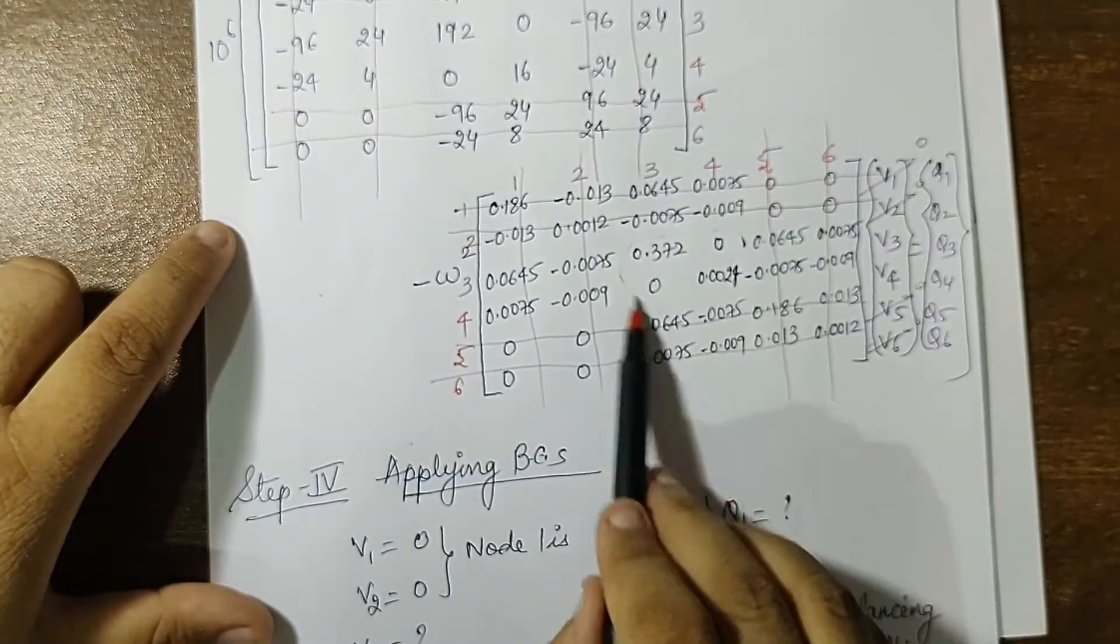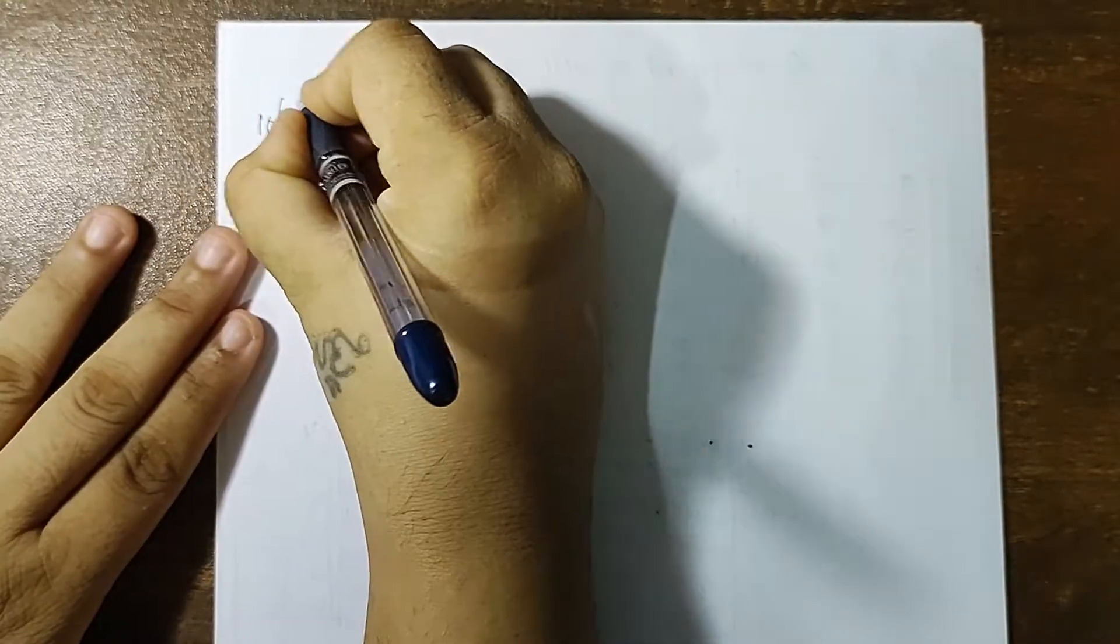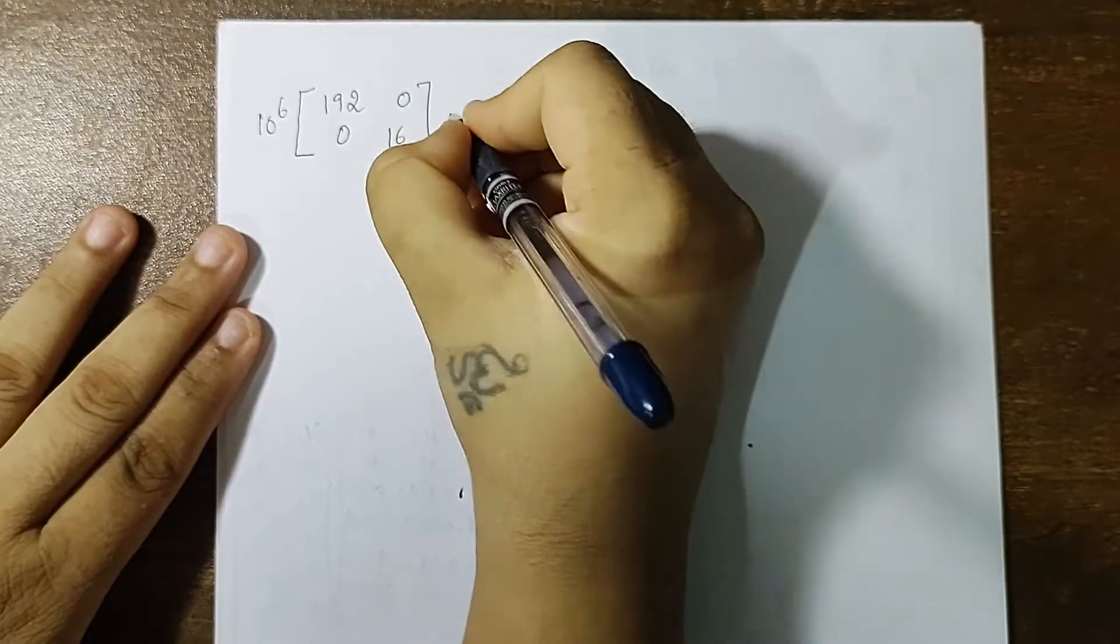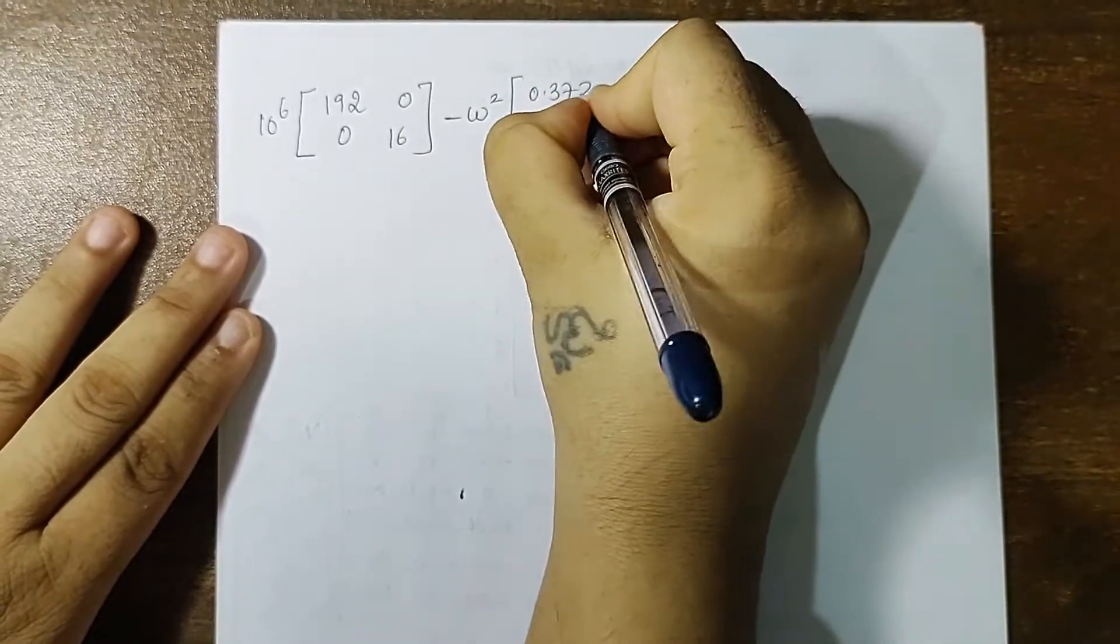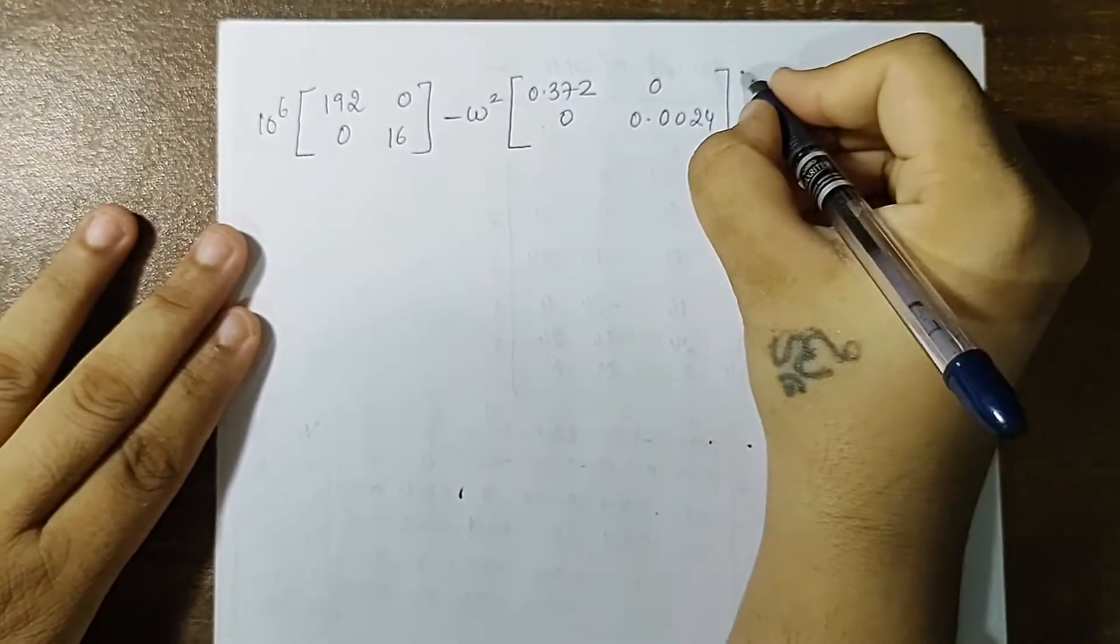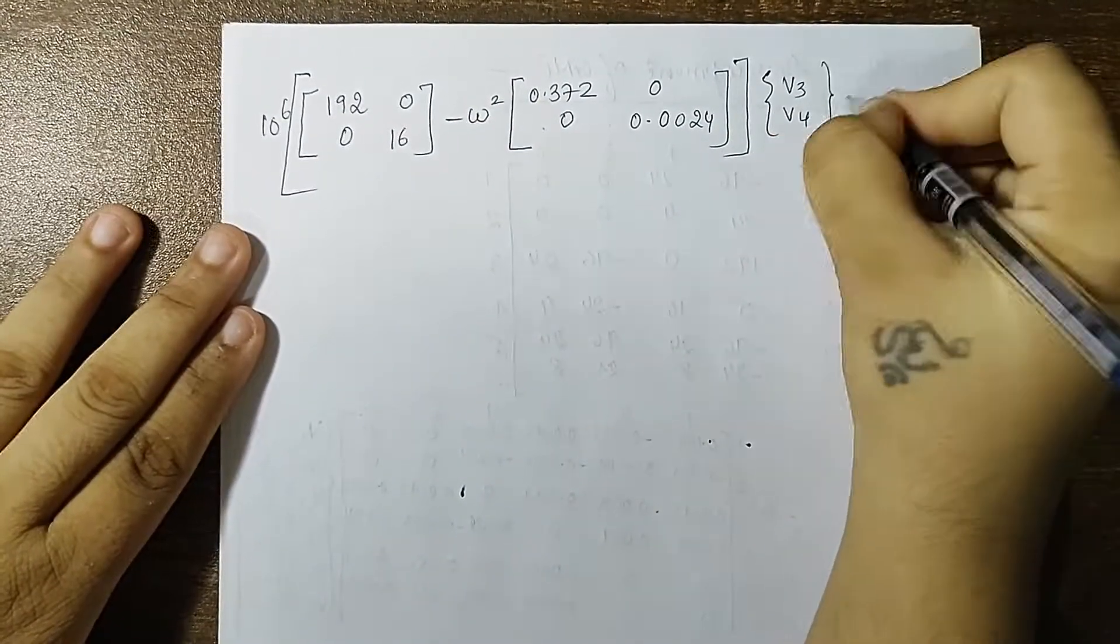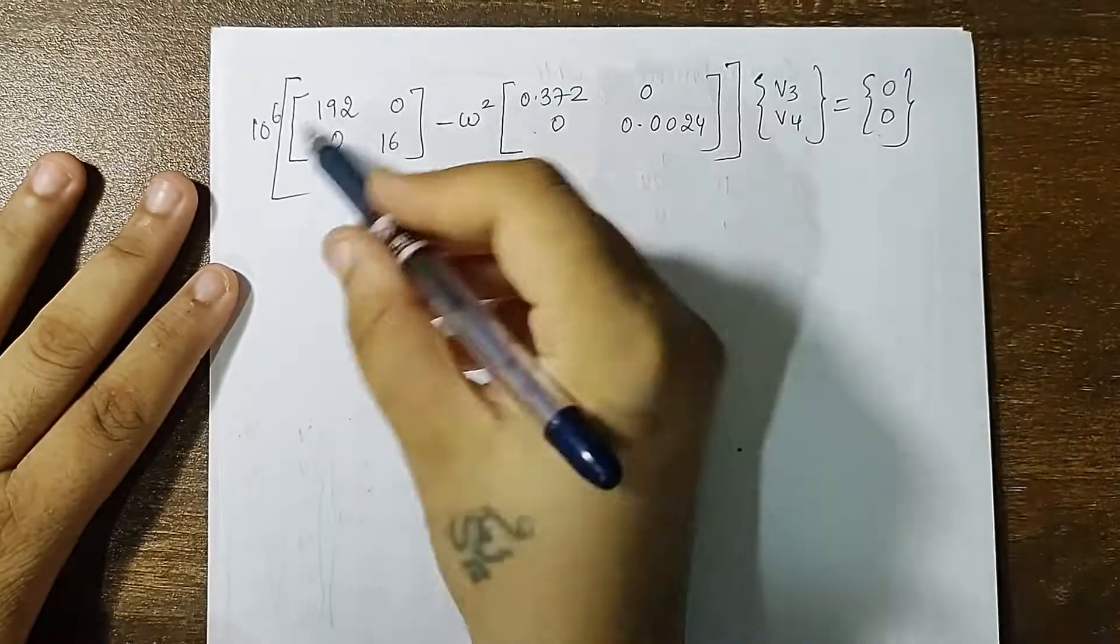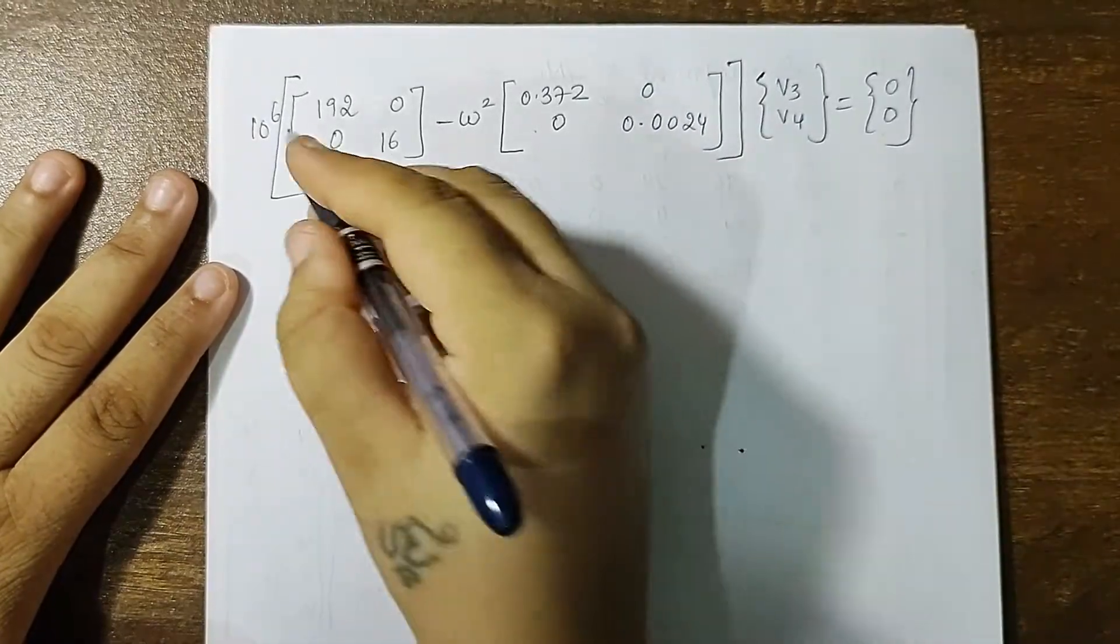You can see a small portion of matrix remains here and here. So I have 10 raised to 6 common, 192, 0, 0, 16 minus omega square 0.3720, 0 and 0.0024. Here I have V3, V4 is equal to 0. These two can be taken on the other side. This is like A into P is 0, so I have only this much portion left to calculate the value of frequency.